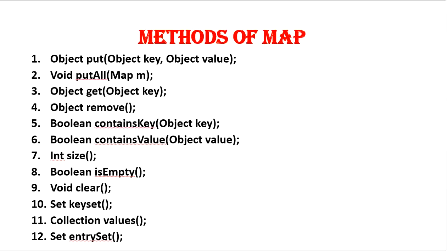These are the methods of Map interface. First one is object put(), which is used to add the key-value pair to the map. If the specified key is already available then the old value will be replaced with the new value. The next one is putAll(), used to add a group of key-value pairs. The third one is object get(), to get any object based on its key. Then remove(), which is used to remove the object.